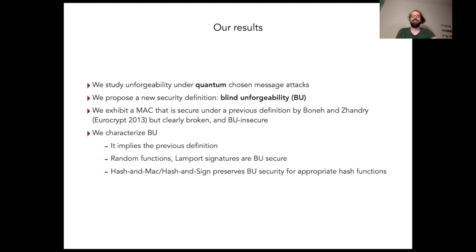We go on to characterize blind unforgeability by first proving that it also implies the previous definition by Boneh and Zhandry, but also by proving that random functions on the one hand and also the Lamport one-time signature scheme are secure under it. Finally, we also prove that the hash and MAC or hash and sign paradigm preserves BU security if we choose an appropriate hash function.